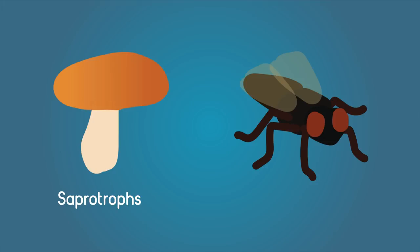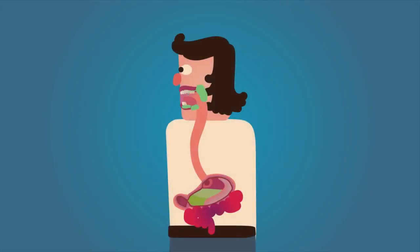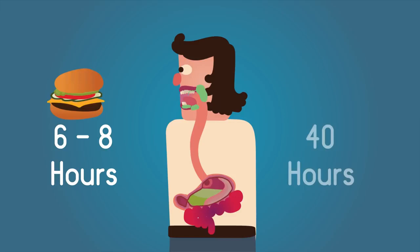Hmm, lovely. Imagine spitting on your burger until it's just a sleed and then eating it. Yuck! Anyway, let's get back to humans. The whole process of digestion can take a long time. It takes six to eight hours for food to pass through the stomach and small intestine, and almost 40 hours before you see the remains of your burger coming out the other end.